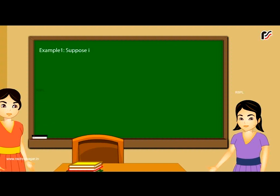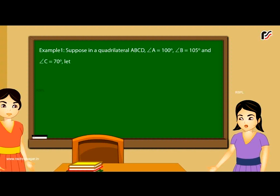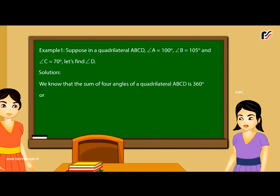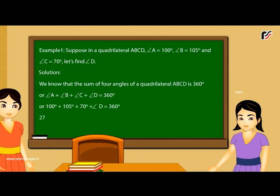Example 1: In a quadrilateral ABCD, angle A = 100°, angle B = 105°, and angle C = 70°. Let us find angle D. We know that the sum of four angles of a quadrilateral is 360°, so angle A + angle B + angle C + angle D = 360°, giving 100° + 105° + 70° + angle D = 360°. Therefore, angle D = 360° − 275° = 85°.